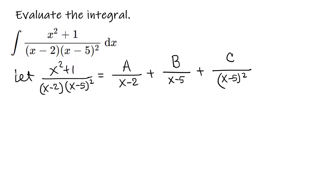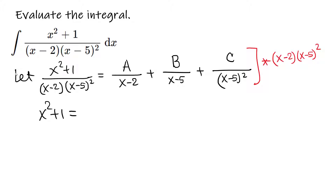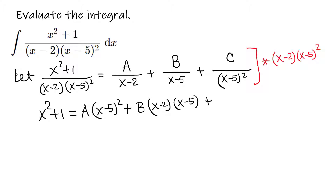Next we determine the values of A, B, and C. We multiply through by the common denominator, which is (x minus 2)(x minus 5) squared. After cancellation we get: x squared plus 1 equals A times (x minus 5) squared plus B times (x minus 2)(x minus 5) plus C times (x minus 2).